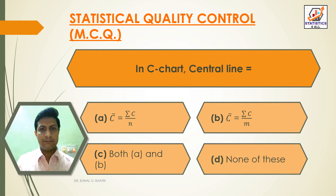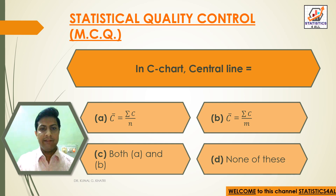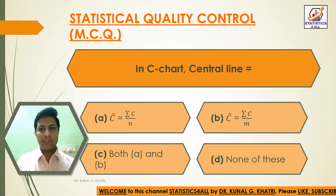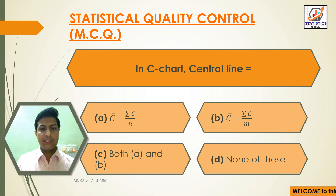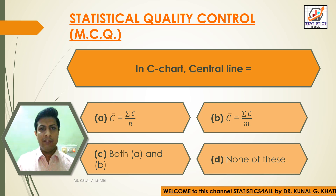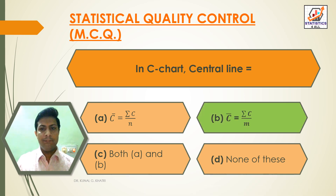Next question: in C chart, center line is equal to? Option A: C bar is equal to sum of C divided by N. Option B: C bar is equal to sum of C divided by M. Answer: Option B — C bar equal to sum of C divided by M is the central line in C chart.